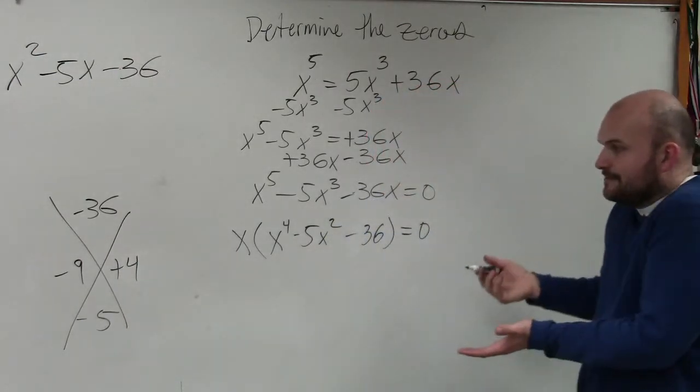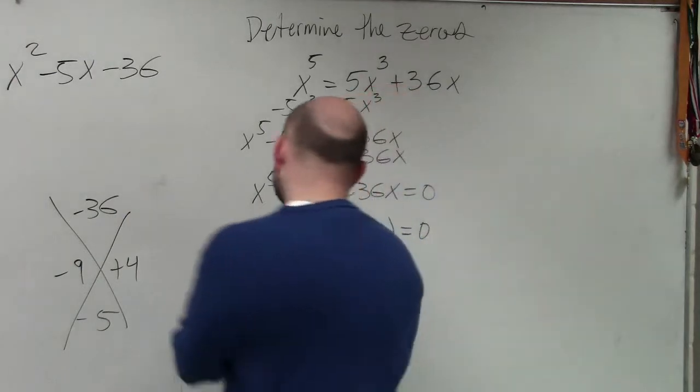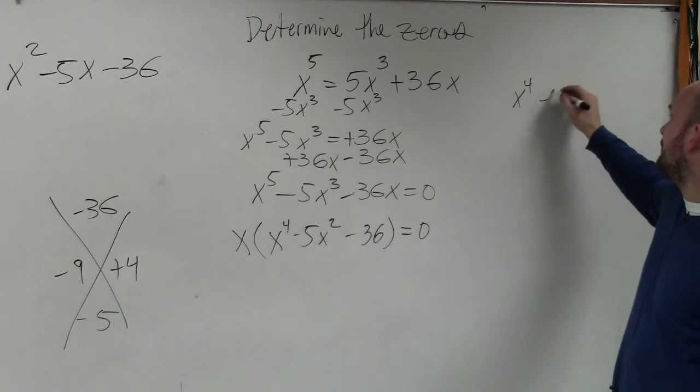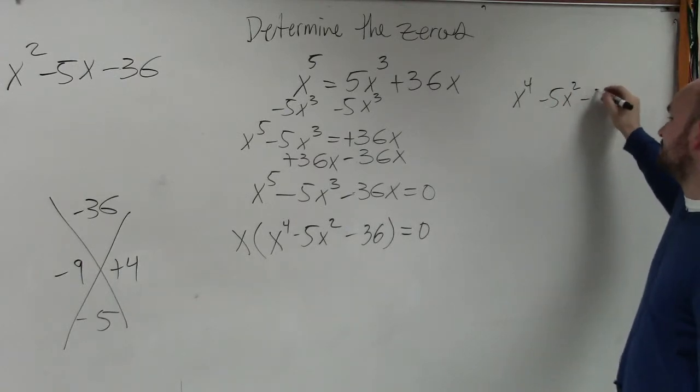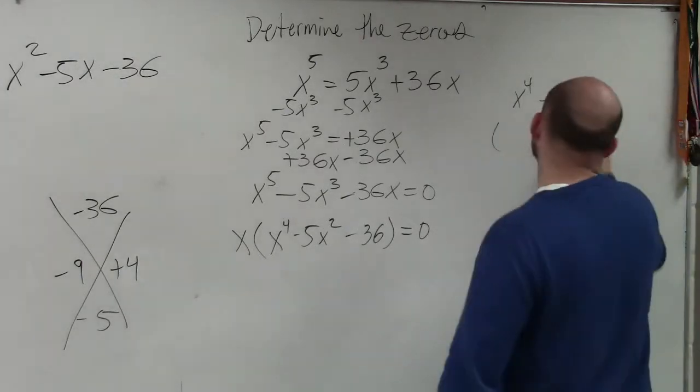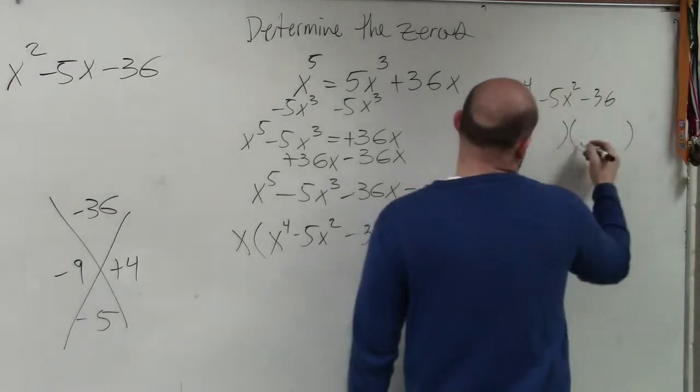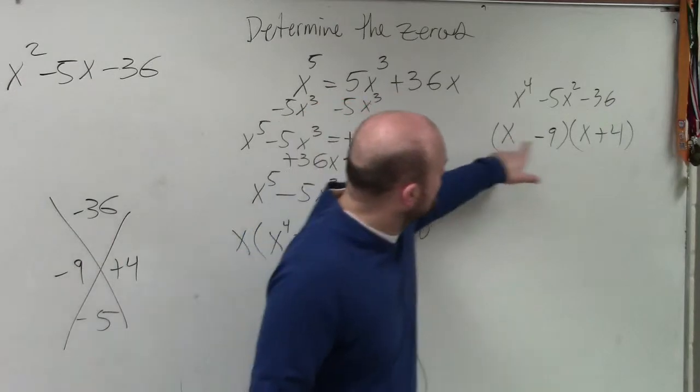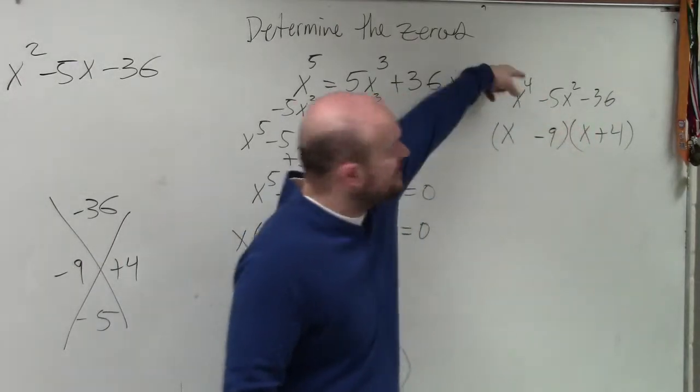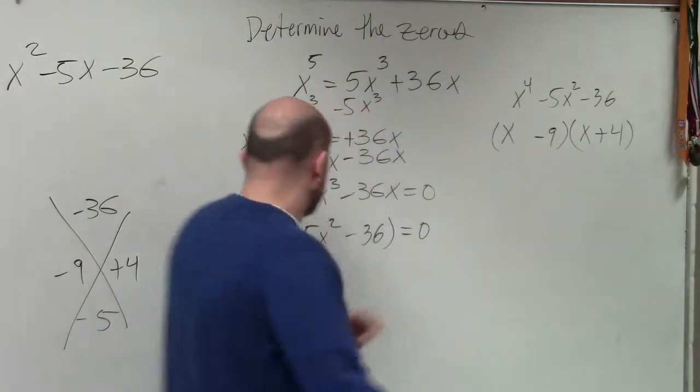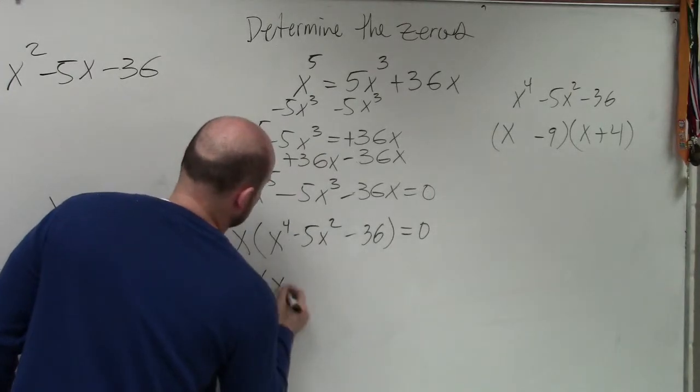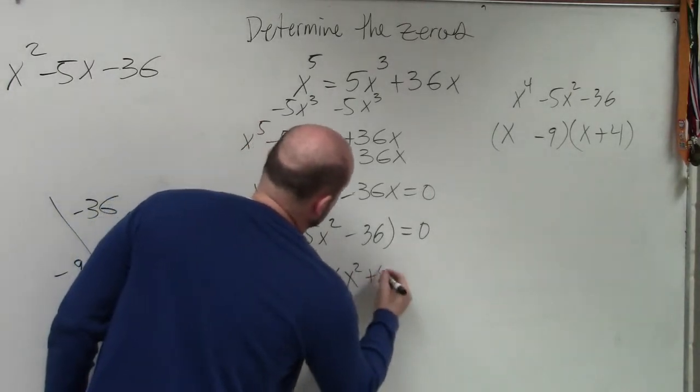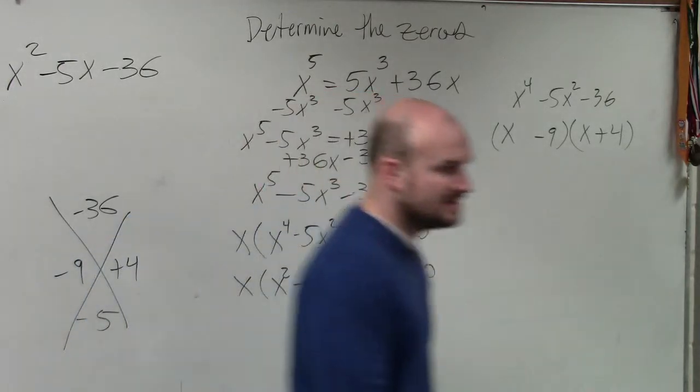However, ladies and gentlemen, that is not going to factor for this. So if I have x to the fourth minus 5x squared plus 36, I know that the first two terms are going to be x and x. And the last two terms are going to be minus 9 and positive 4. However, what powers of x should I be to get to x to the fourth? Squared. So this is x times (x squared minus 9) times (x squared plus 4) equals 0. You guys see that?